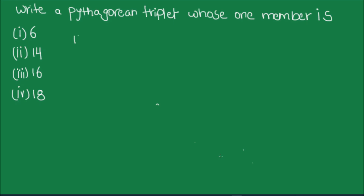Let's start with the solution to the first part, which says one of the members of the Pythagorean triplet is 6. Pythagorean triplets are 3 positive integers such that the square of the sum of two integers is equal to the square of the third integer. Pythagorean triplets are three numbers of the form 2m, m²+1, and m²-1. These are the general numbers through which we can find the exact values.